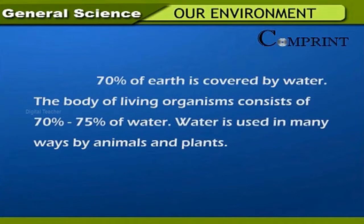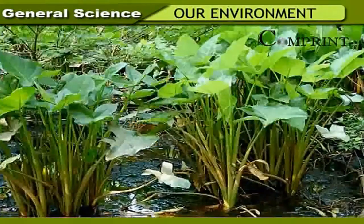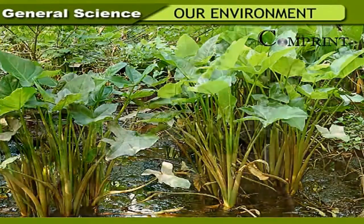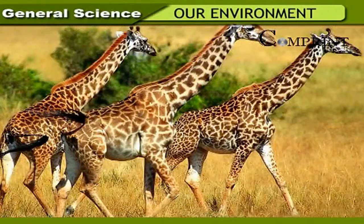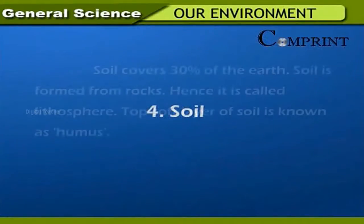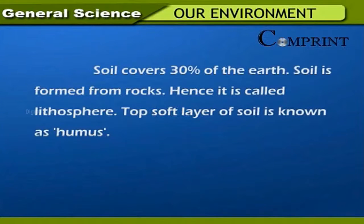Water: Seventy percent of earth is covered by water. The body of living organisms consists of seventy to seventy-five percent water. Plants use water for photosynthesis, germination of seeds, and absorption of salts, nutrients, and manure. Animals have a lot of water in their body; water is required for transport of gases, liquids, and digested food, and also for excretion of waste materials, reproduction, and development.